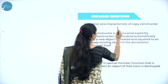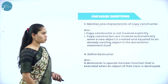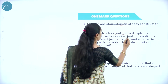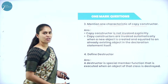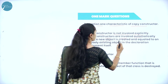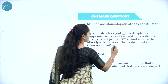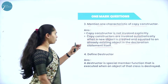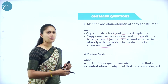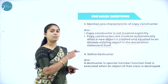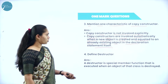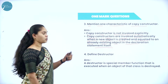Next, mention any one characteristic of copy constructor. Here I have listed out 2 points. Out of this you can write any one in order to get 1 mark. Copy constructor is not invoked explicitly. The copy constructors are invoked automatically when a new object is created and equated to an already existing object in the declaration statement itself. So if I am creating a new object and copying the content to that new object from an existing object, then this copy constructor will be invoked.